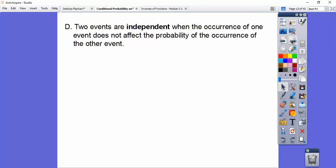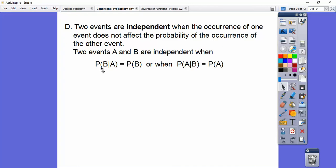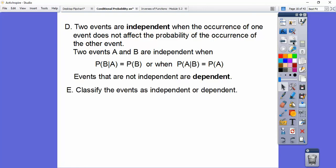So two events are independent when the occurrence of one event does not affect the probability of the occurrence of the other event. So two events A and B are independent when the probability of B given A is the same as the probability of B, or when the probability of A given B is the same as the probability of A. Don't let that confuse you. If it affects the other one and if they're not independent, they're called dependent.